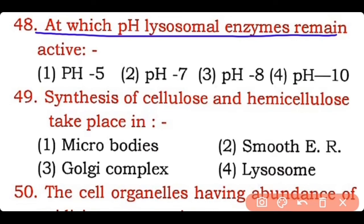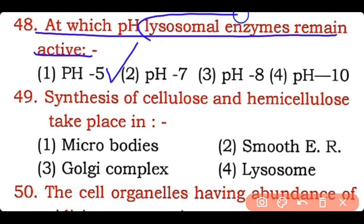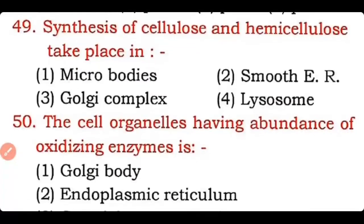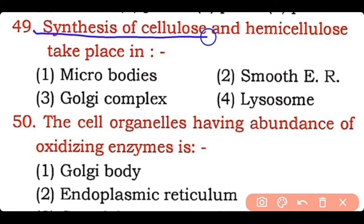Question 48: At which pH do lysosomal enzymes remain active — pH 5, pH 7, pH 8, or pH 10? Correct answer is option one — lysosomal enzymes remain active at pH 5. Question 49: Synthesis of cellulose and hemicellulose takes place in — microbodies, smooth endoplasmic reticulum, Golgi complex, or lysosome?